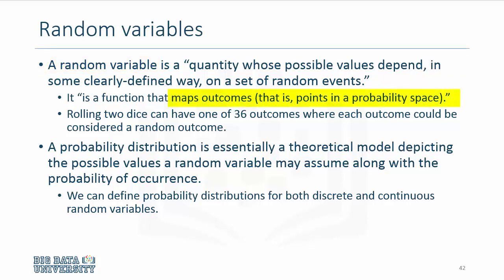Probability space is essentially all possible outcomes. If you roll a die, it can have one out of six outcomes, so that's the probability space there. If you roll two dice, you can have one out of 36 outcomes where each outcome could be considered a random outcome.